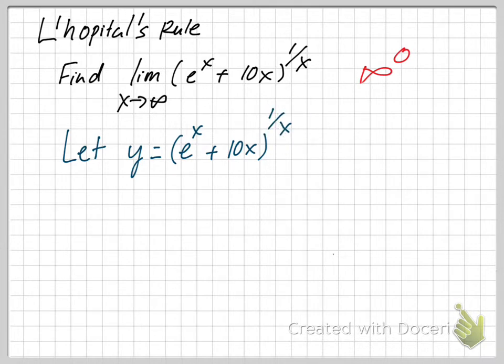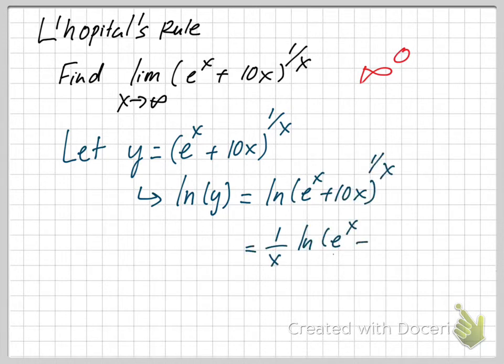Natural log of y equals ln of the function, and then you can use the power rule of logarithm to move 1/x down to the front. So now we have ln(y) = ln(e^x + 10x)/x.